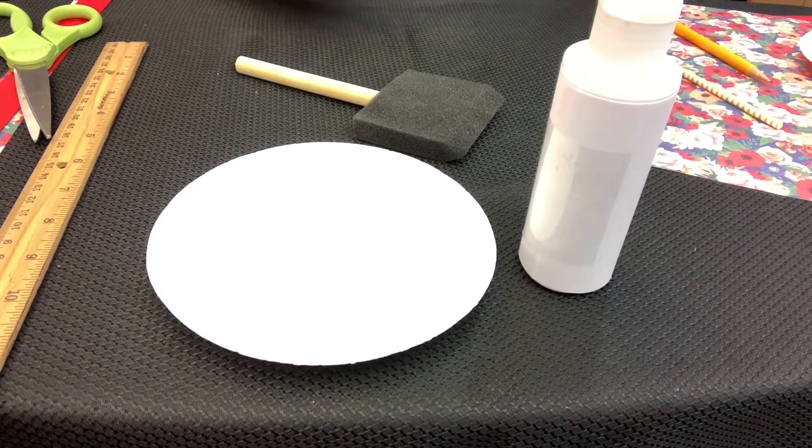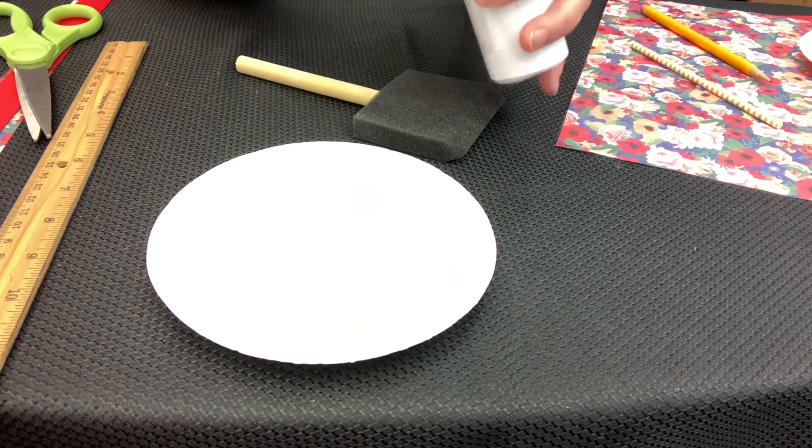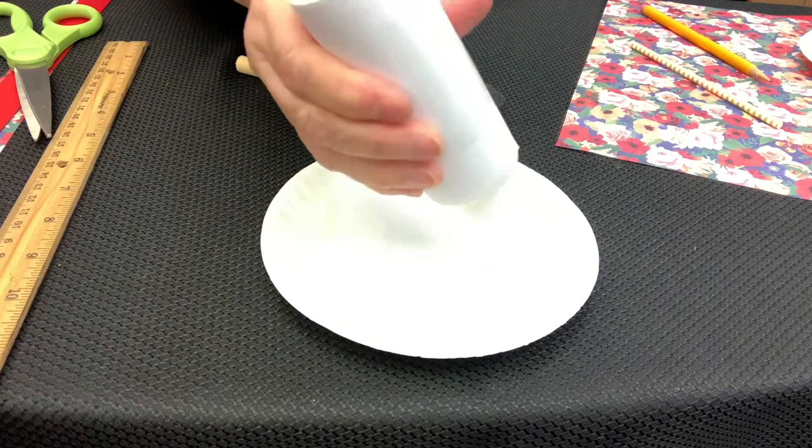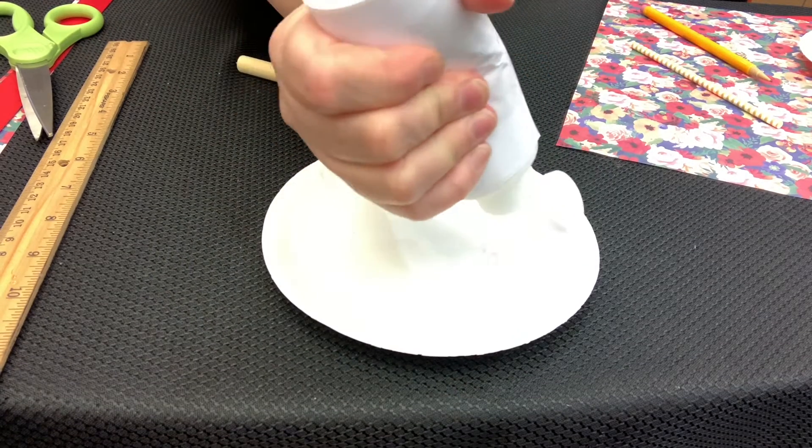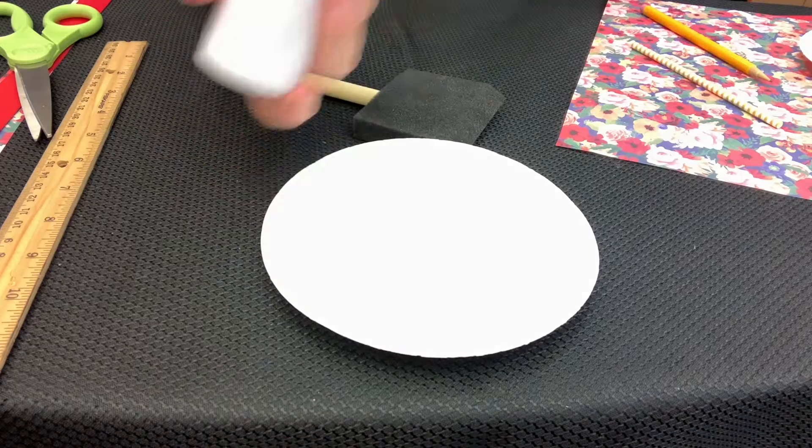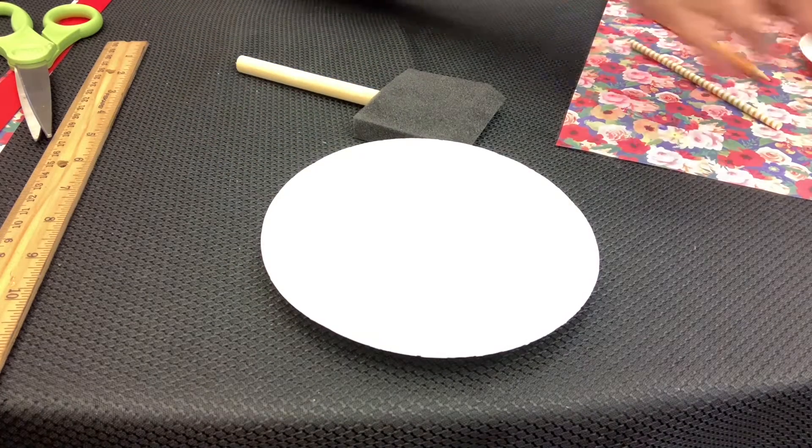Now you're going to take the water-based all-in-one sealer glue finish that you can use for decoupage. You'll put it on the paper plate. Put a healthy dose of it on the paper plate.